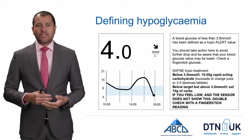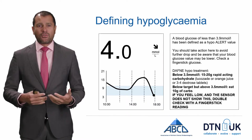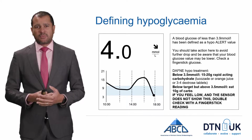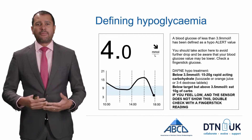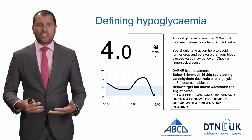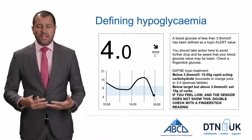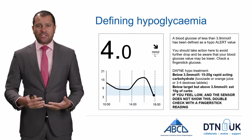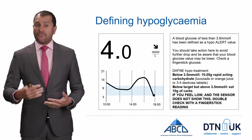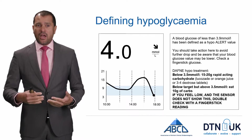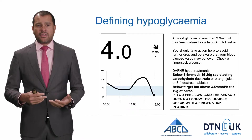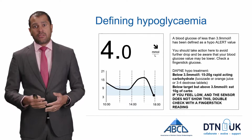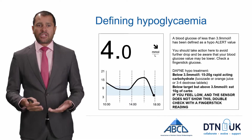A blood glucose of less than four, or 3.9 millimoles per litre, has been called a hypoglycemia alert value. This is a level where you should take action to avoid any further drop, and be aware that your blood glucose could again be lower than what your Libre is showing.